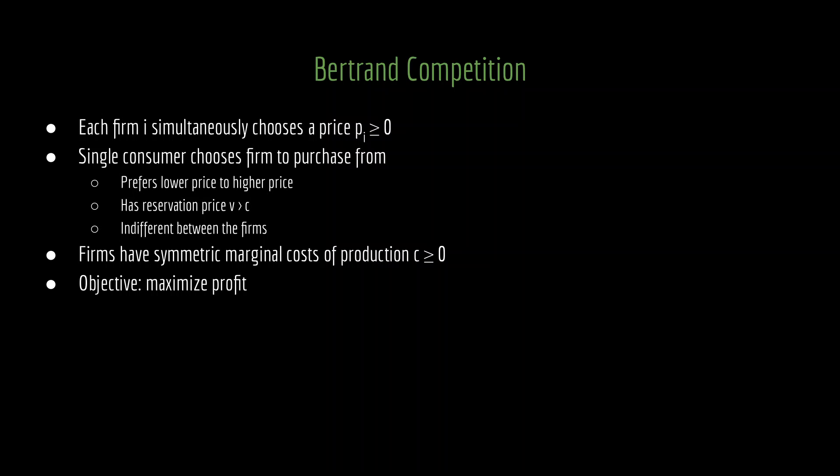We're going to have the firms with symmetric marginal cost of production, which is some value C, at least zero. Why is it the case that we're looking at a symmetric marginal cost of production? Turns out that Bertrand competition is a little bit more complicated when we have asymmetric marginal cost of production. So to keep things simple when we're starting off here, we're going to look at the symmetric case, and then in later lectures we'll encounter what happens when we have asymmetric marginal costs. As always, the firms just want to maximize their profit.